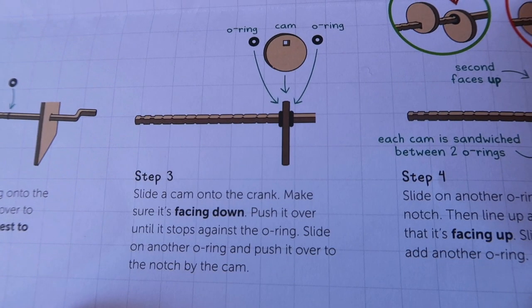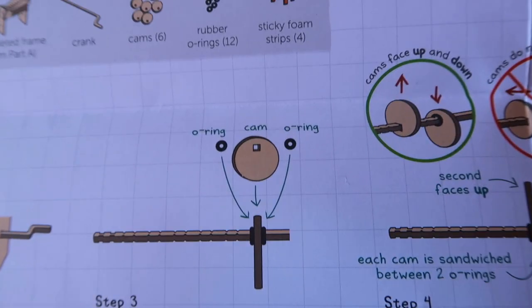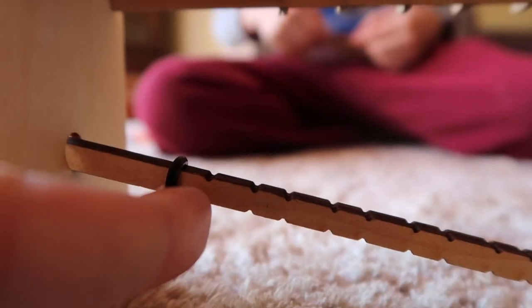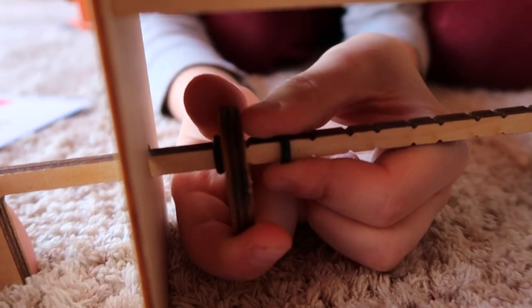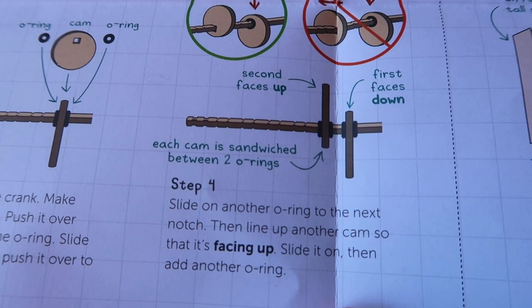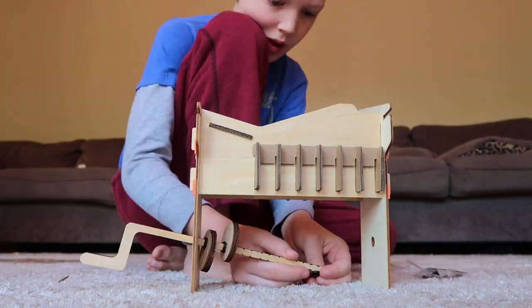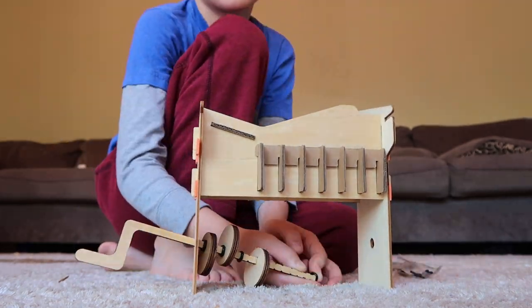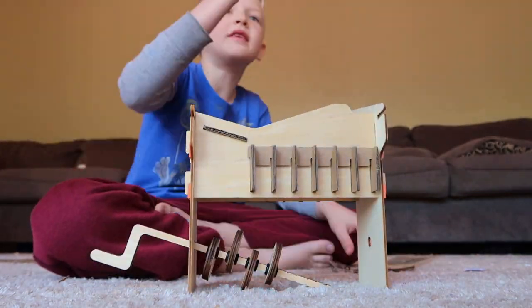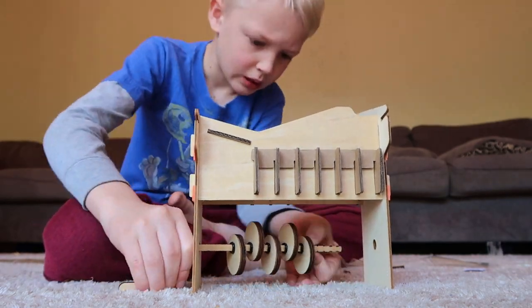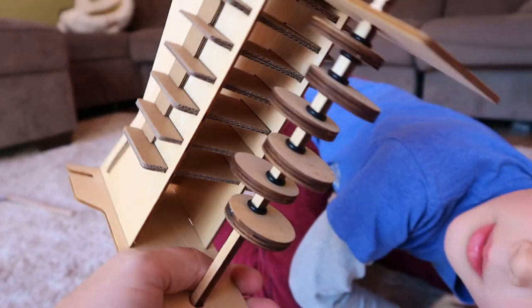Slide a cam onto the crank. Make sure it's facing down. Push it over until it stops against the o-ring. Slide on another o-ring and push it over the notch by the cam. So we're gonna put a cam right there and then another o-ring on the other side of the cam. Slide on another o-ring to the next notch. Then line up another cam so that it's facing up. Then add another o-ring. Keep on going until you have all six cams on. Make sure the cams alternate facing up and down.